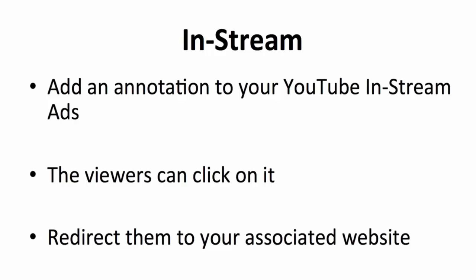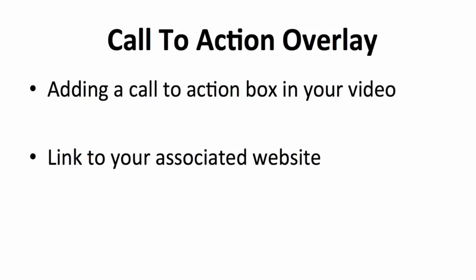The next method that allows you to build your list from your YouTube channel is by editing annotations in your YouTube in-stream ads. You can tweak links to direct viewers to your homepage or squeeze page. For the display URL, type in your homepage or associated website — this creates a clickable link in your in-stream ad. For the final or destination URL, insert the URL of your associated website or squeeze page. To set this up, go to the settings for your in-stream section, type in the relevant URLs, scroll to the bottom of the page, and hit Save.